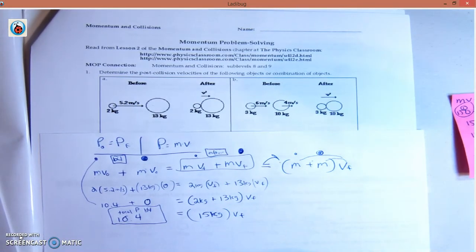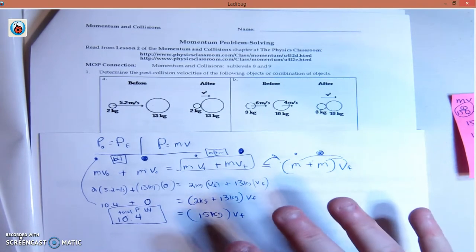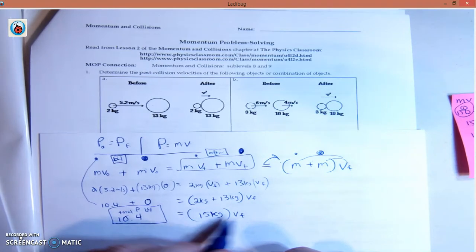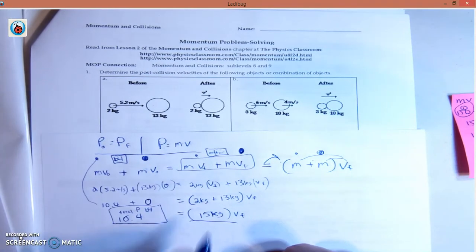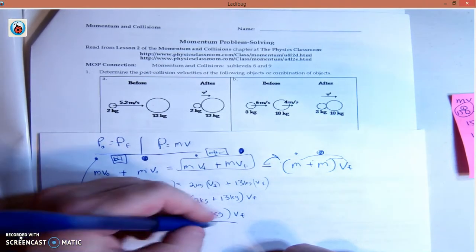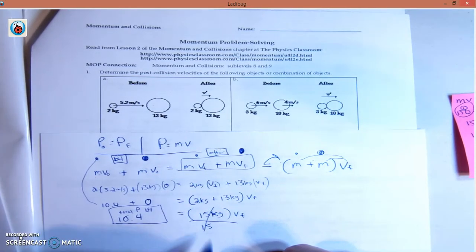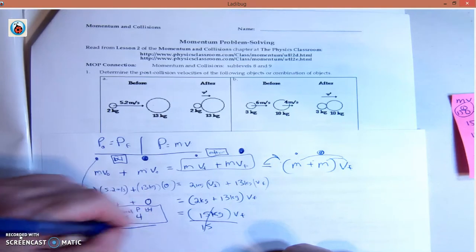How do we get this out? It's multiplying here, so we do the opposite. We divide it out to make it one. Divide by 15, cancel that out. Whatever we do to one side, we do to the other side, divide by 15.